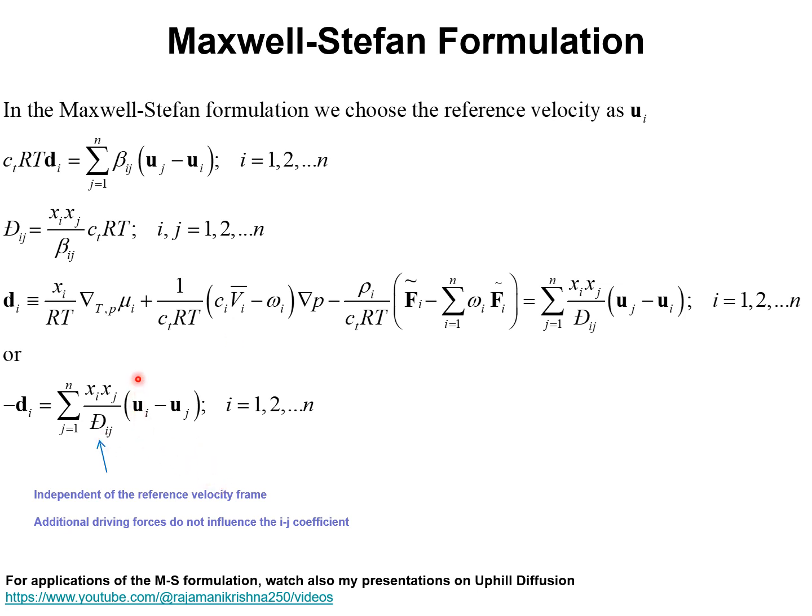In other words, the coefficient D i, j is the same whether the chemical potential gradient acts on its own or in the presence of the pressure gradient and external driving forces. This is an important persuasive advantage of the MS formulation over the Onsager formulation. I also stressed this in my presentation on uphill diffusion that is viewable on my YouTube channel.